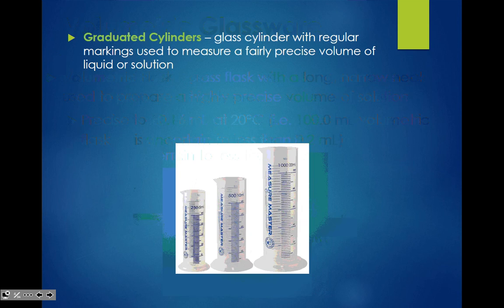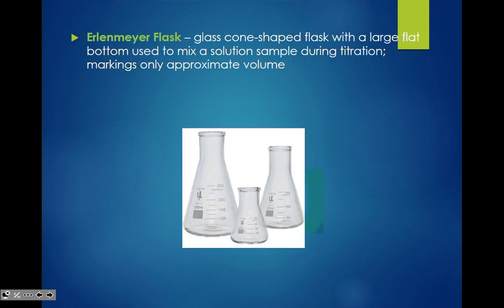A graduated cylinder is a different story — notice how there are different gradients. I can measure 1 mil, 2 mils, 3 mils. It's a glass cylinder with regular markings used to measure a fairly precise volume of liquid or solution — that would be your second best. An Erlenmeyer flask is a glass cone-shaped flask with a large flat bottom used to mix a solution sample during titrations; its markings give only approximate volume.